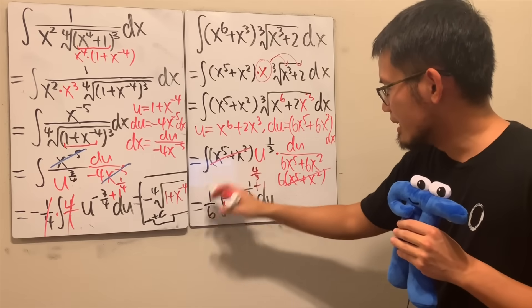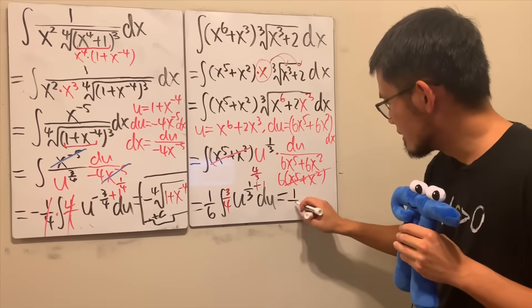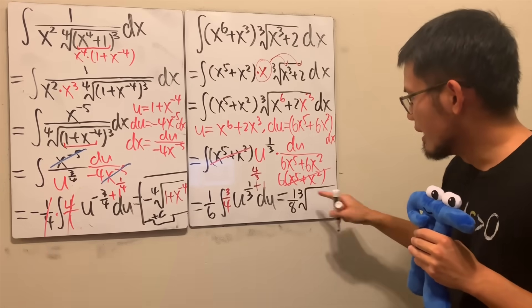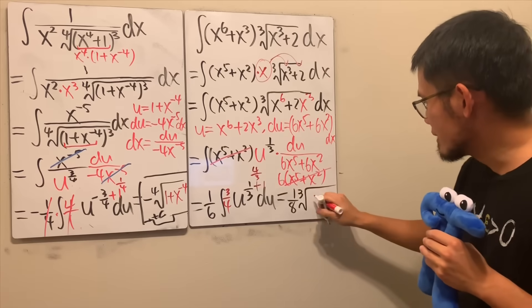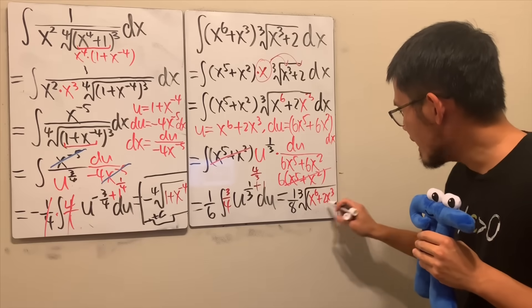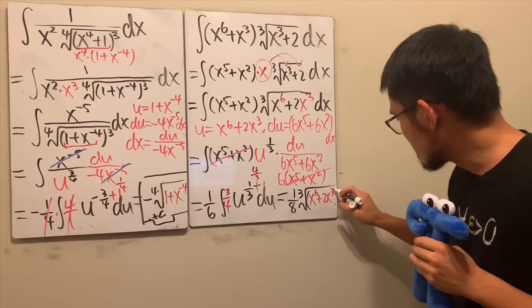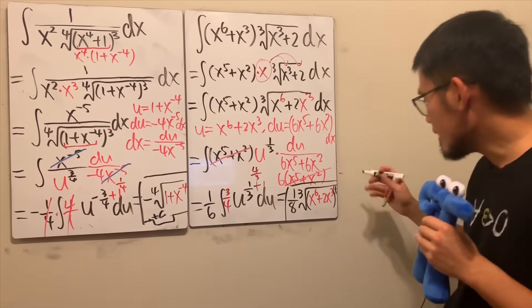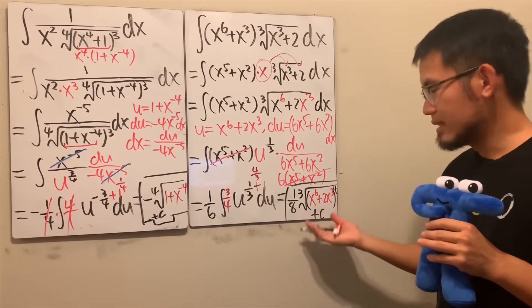So the answer is one-eighth times the cube root of x to the sixth plus 2x to the third, raised to the fourth power, plus C.